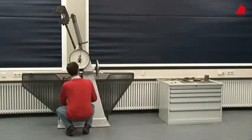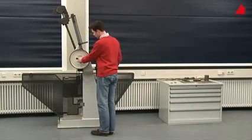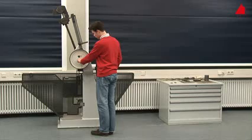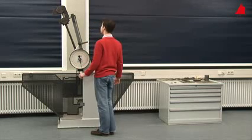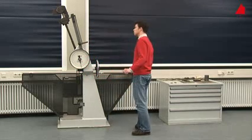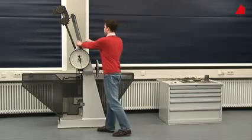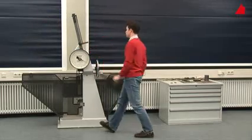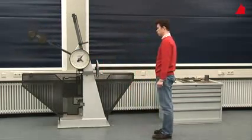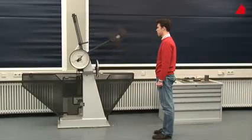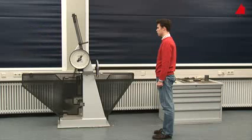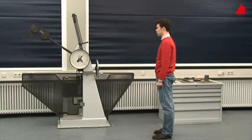Next, he turns the drag indicator downwards again and checks that everything is prepared correctly. The test can begin. The pendulum is released, swings downwards, and hits the specimen with its rounded hammer pin. The specimen absorbs part of the pendulum's energy, so the pendulum doesn't reach the full height on the other side.